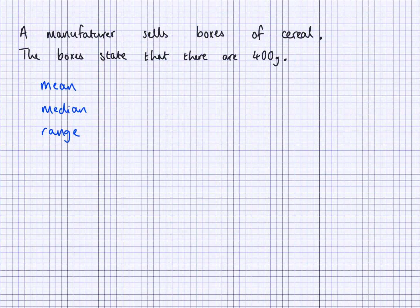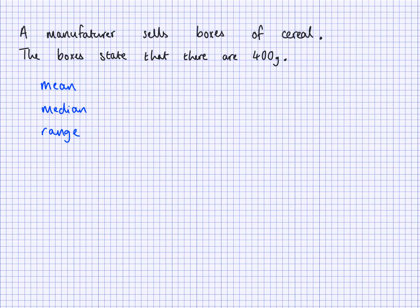Approximately 1 in 20 — that's 5% — fall outside the warning limits. So there are two different limits that we need to set: a warning limit and an action limit. Outside the action limit is a very, very small proportion. Outside the warning limits covers about 5% of all values. The manufacturer will check these summary statistics for the samples that they take.